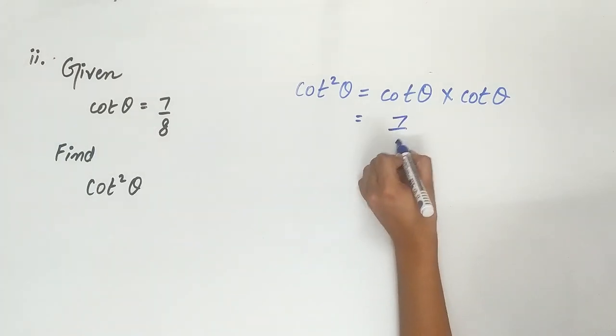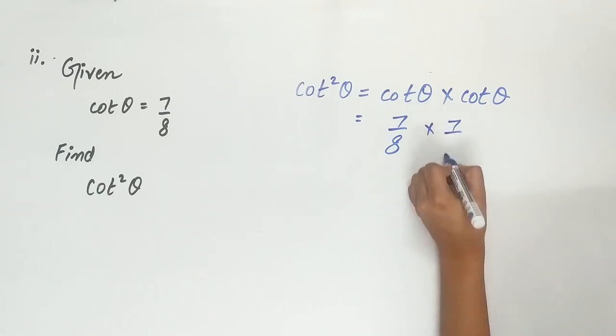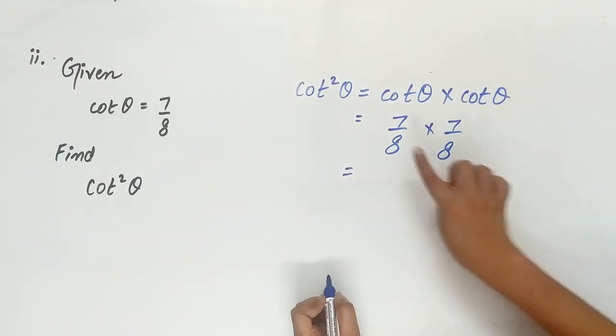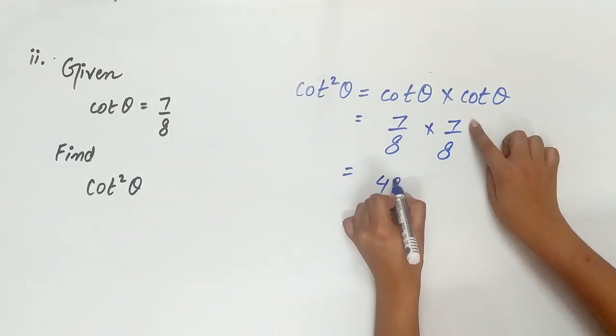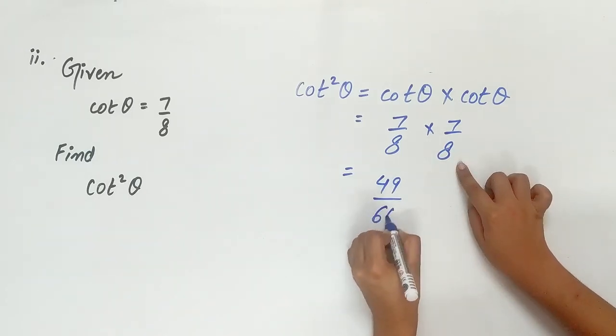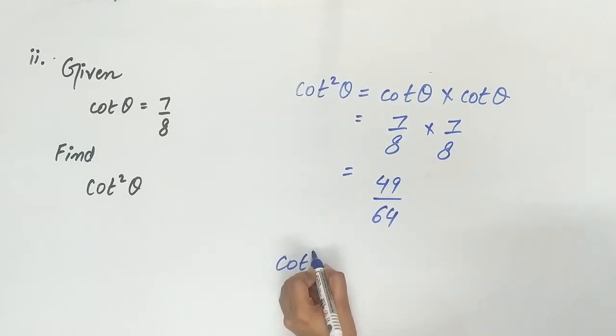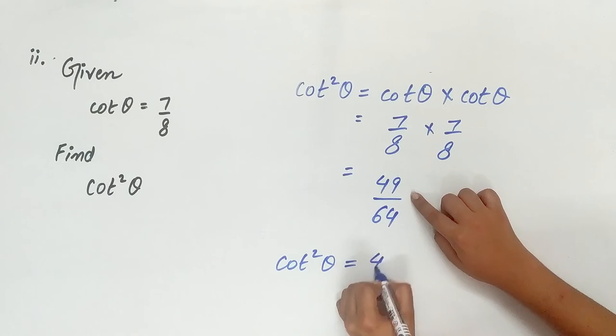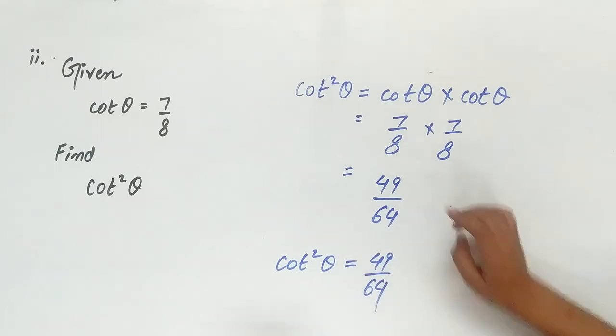Cot theta is 7 by 8 multiplied 7 by 8. 7 multiplied 7 is 49 and 8 multiplied 8 is 64. So cot square theta is equal to 49 by 64. This brings us to an end of question number 7.